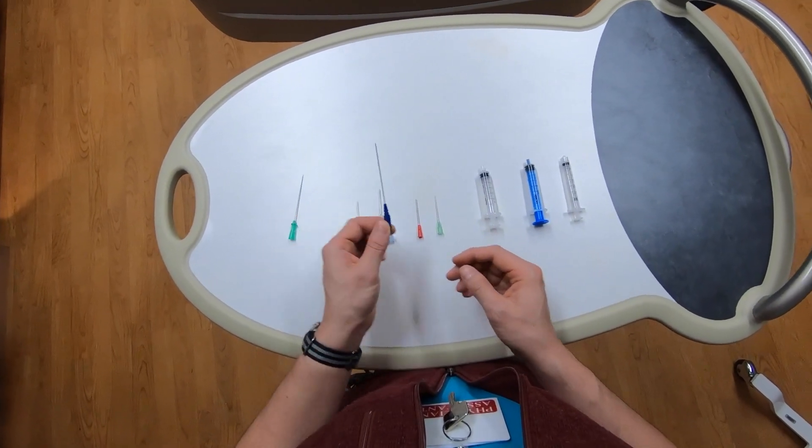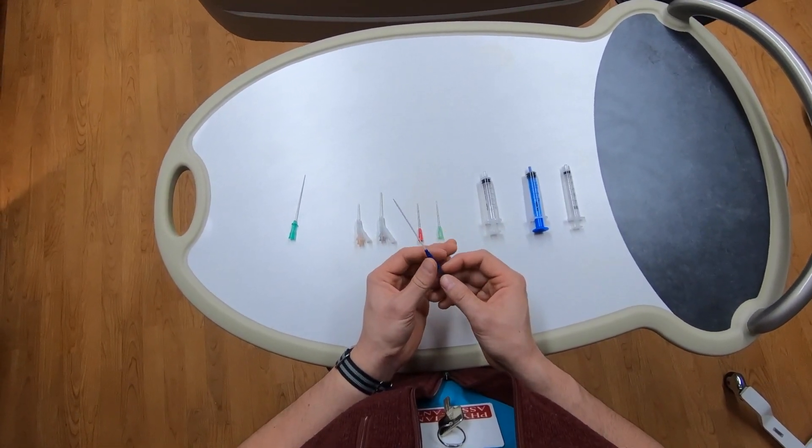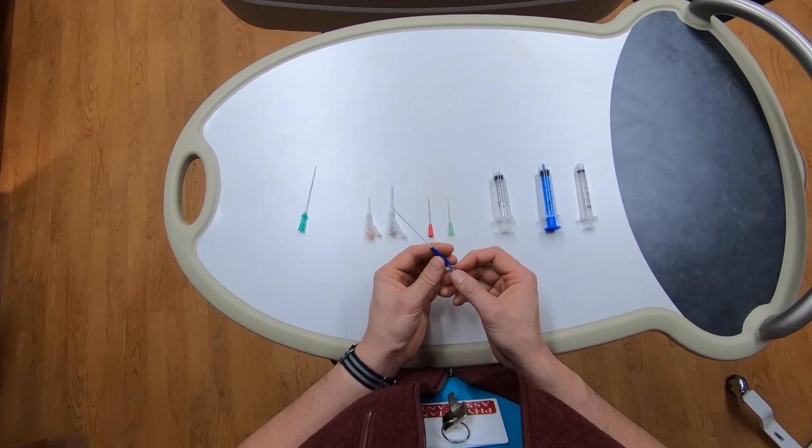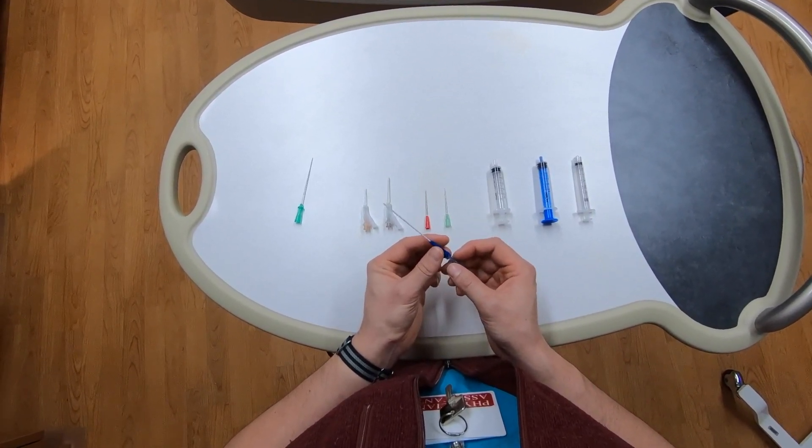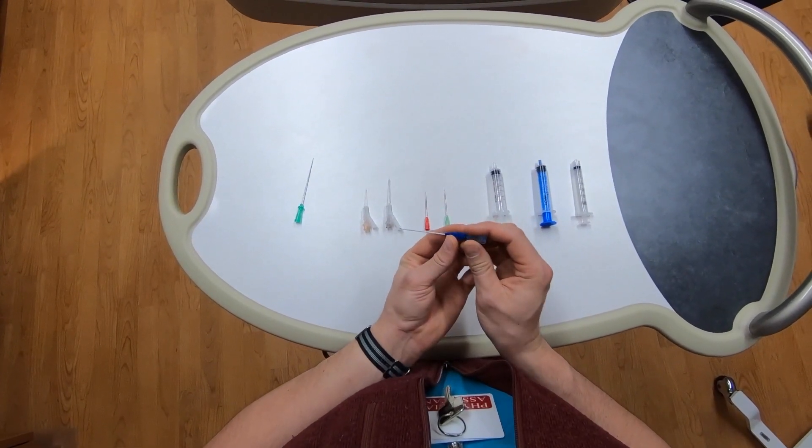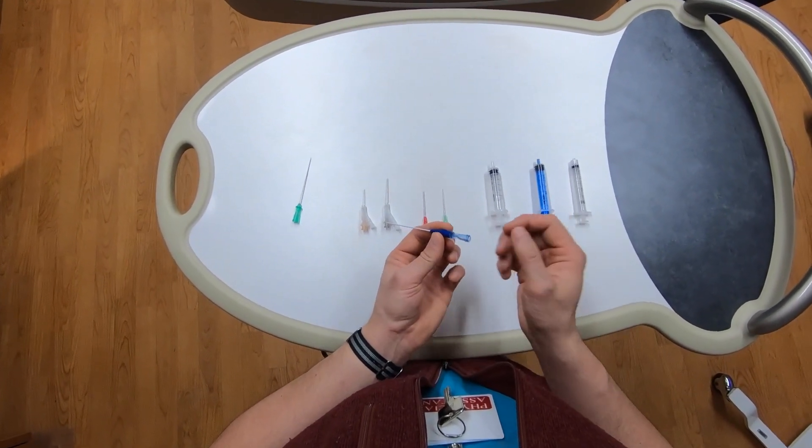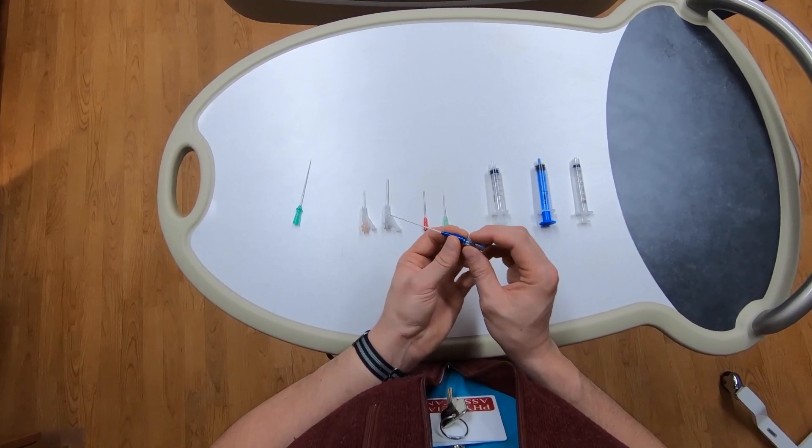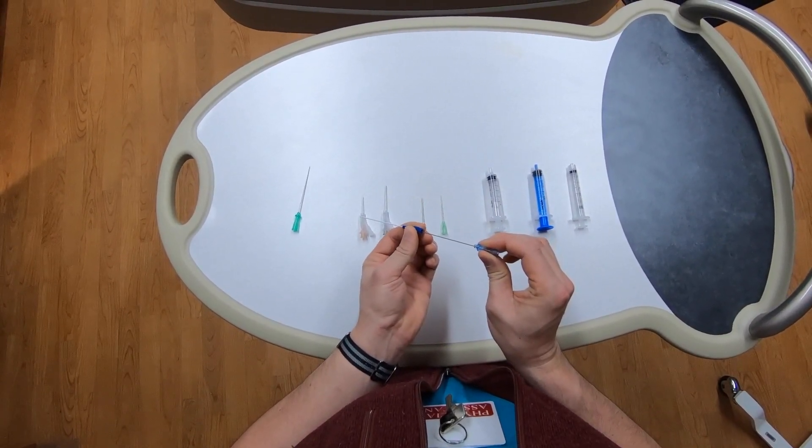Second, you have a catheter over a needle, or angiocath. This is very similar, however, it's used for a somewhat different technique. With this technique, you're going to enter the vessel, and rather than removing your syringe and passing your wire, you're going to advance this catheter into the vessel, just like placing an IV.